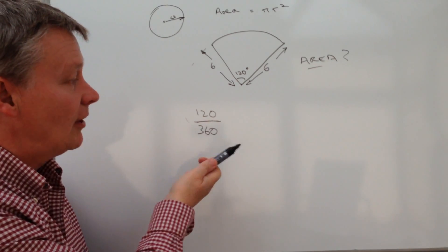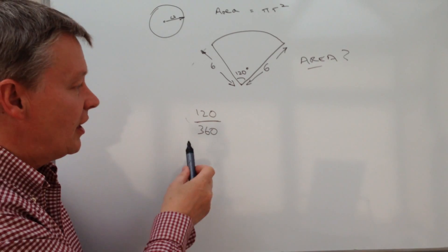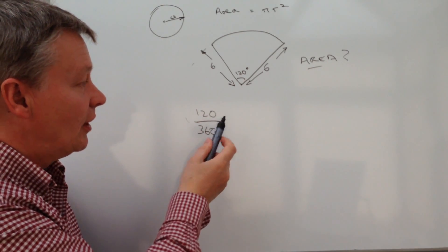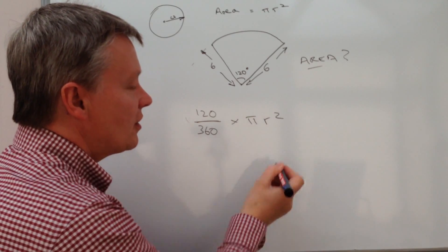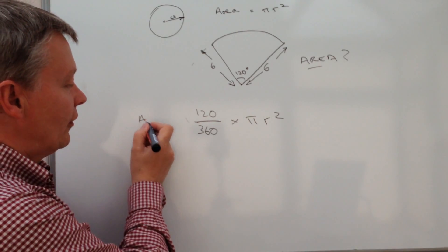So we're going to use that and all we're simply going to do is use that as a portion of the area which is pi r squared.